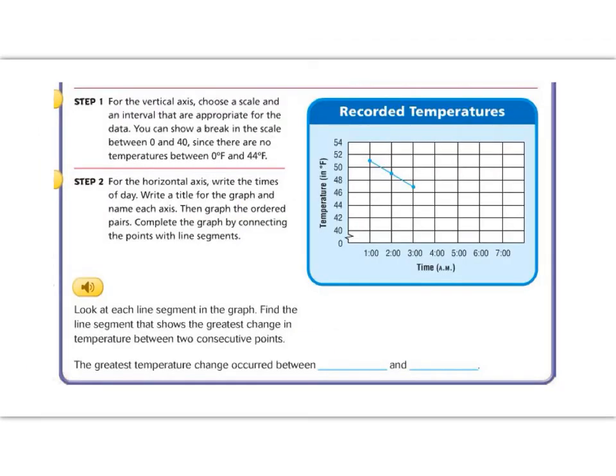All right, step one. For the vertical axis choose a scale and an interval that are appropriate for the data. You can show a break in the scale between zero and 40 since there are no temperatures less than 40. So the vertical axis is this ray here and we're showing the temperature on the vertical axis, our y-axis. Since none of our numbers was less than zero, we use this little squiggle line to show a break in the graph to show that nothing happened from zero to 40.